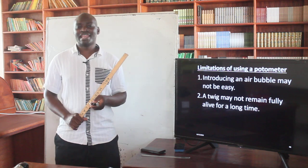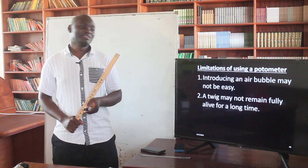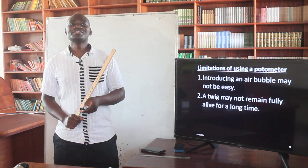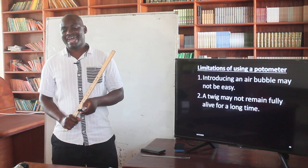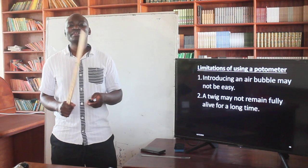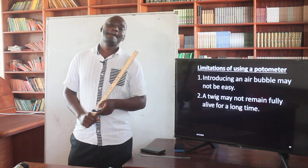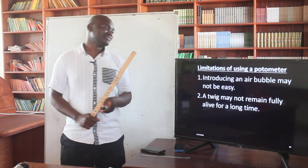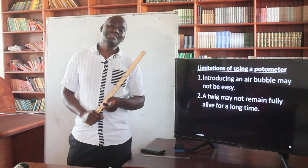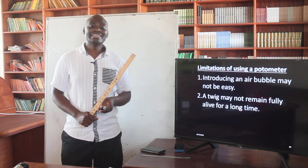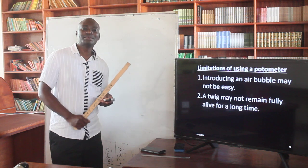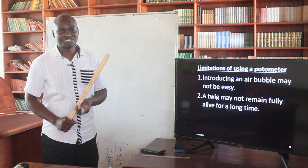The second limitation is that a twig may not remain fully alive for a long time. That shoot or plant we are using may not remain alive for a long time — it may dry, wither, or wilt before the end of the experiment, and that is a setback that can hinder perfect results during the measurement of transpiration.